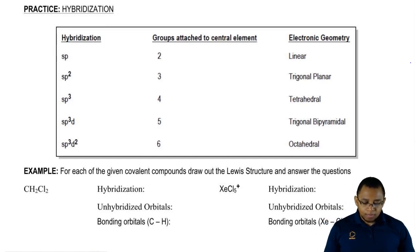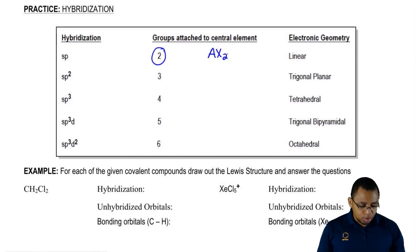We're going to say here, your hybridization of your central element is sp when your central element is connected to two groups. Remember, when you're connected to two groups, your electronic geometry is AX2. If you're AX2, you're linear.